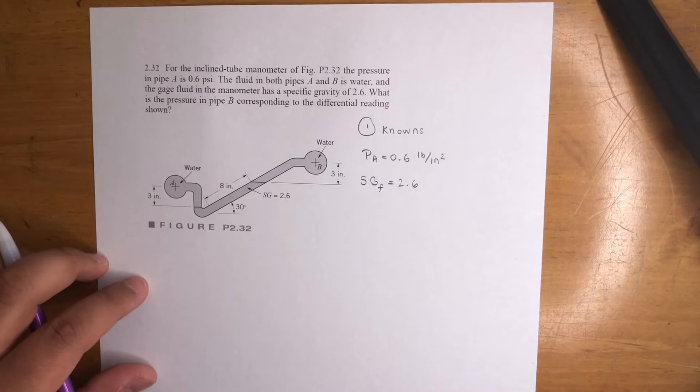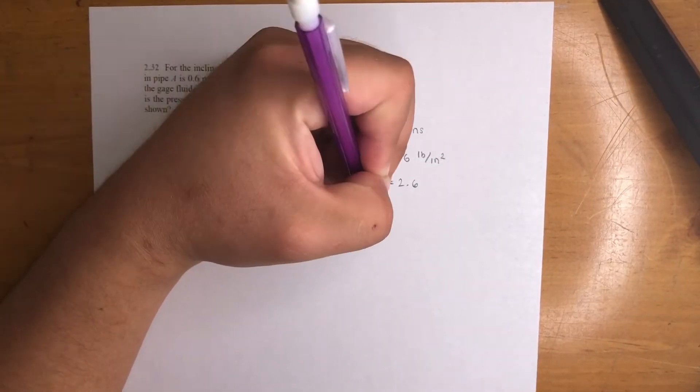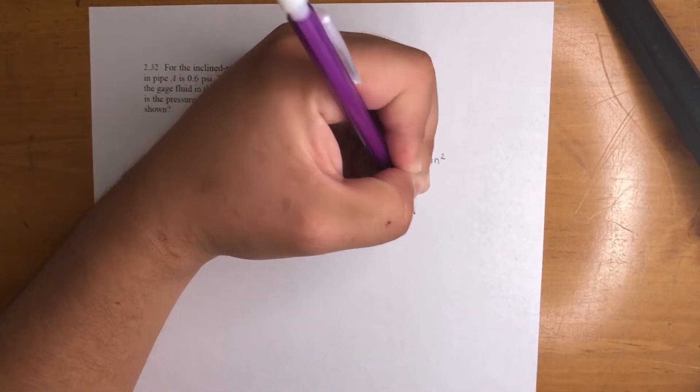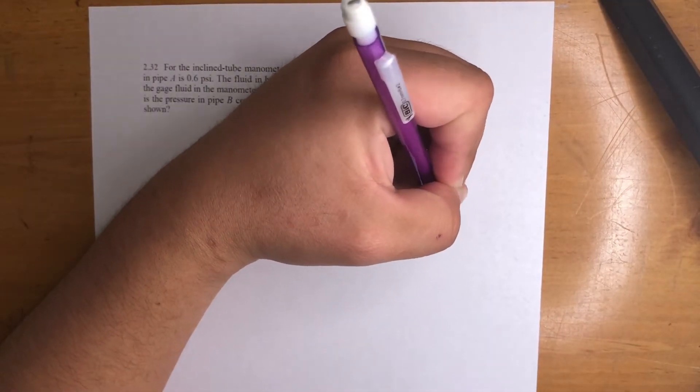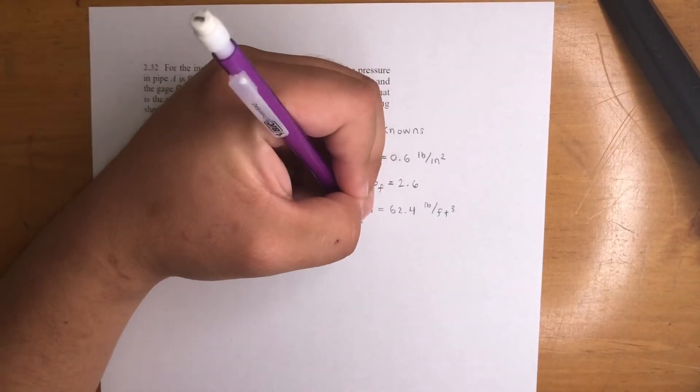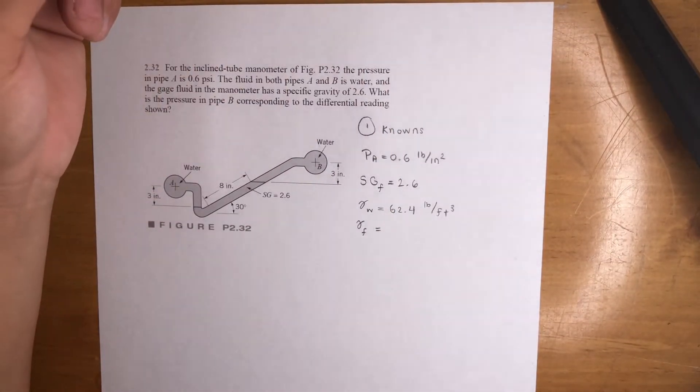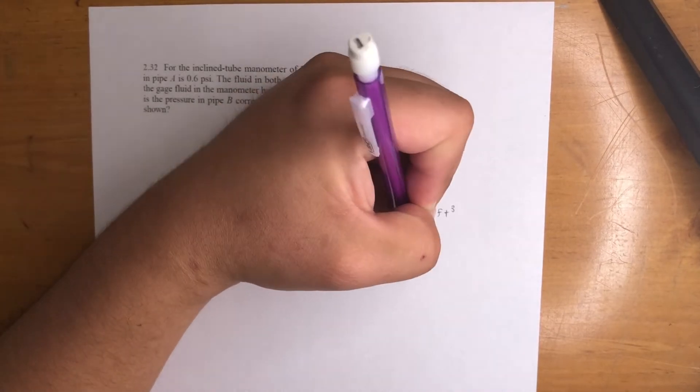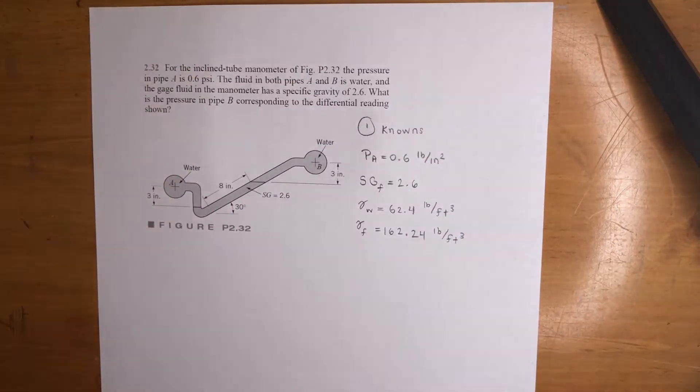So we got that. That means we can get the... well, hold on. We know the specific weight of water, that is 62.4 in English units, 62.4 pound per feet cubed. And multiply this times this to get the specific weight of the fluid. So that will give you 162.24 pound per feet cubed. So we got those two.